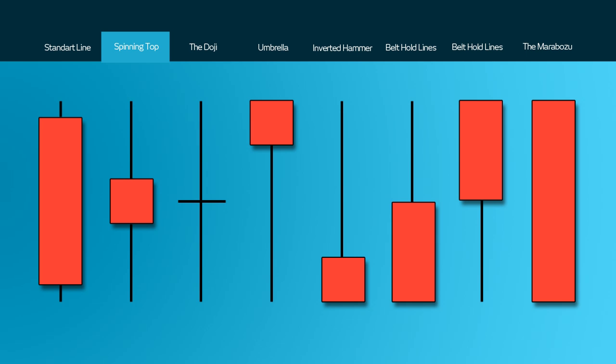The small real body can often show little movement from open to close and the shadows can indicate that the bulls and the bears were very active during the session. After a long decline the spinning top can indicate weakness amongst the bears and a potential change or an interruption in trend.